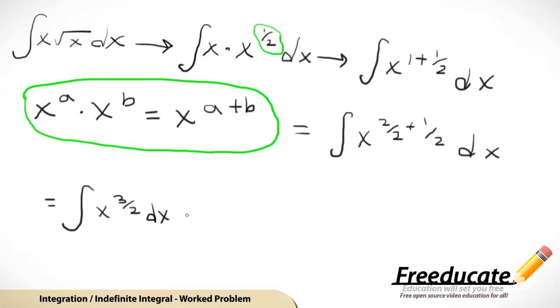So, our anti-derivative, remember that's capital F of x, it's just going to equal x to the n plus 1 over n plus 1, right? Well, n is 3 halves, so n plus 1 is 3 halves plus 1. So, 3 halves plus 1, well that's the same thing as 3 halves plus 2 halves. Again, I'm just utilizing the common denominator. And remember that exponent is our entire denominator for our anti-derivative.